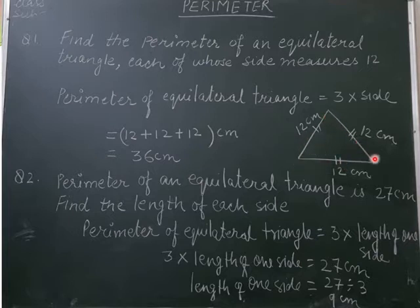Look at this triangle. In this triangle, all sides are equal: 12 cm, 12 cm and 12 cm. So this is the equilateral triangle. The perimeter of equilateral triangle is equal to 3 into side.